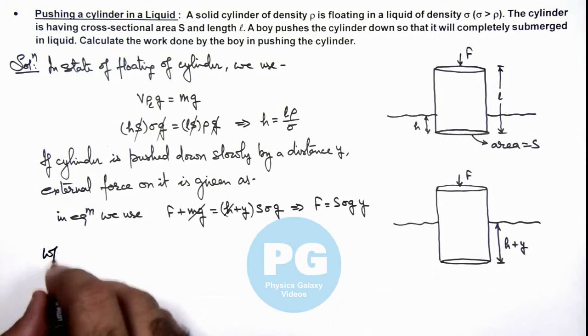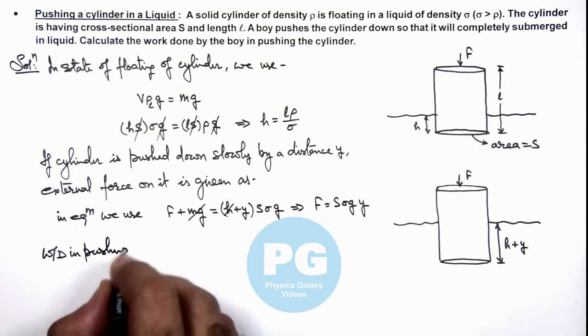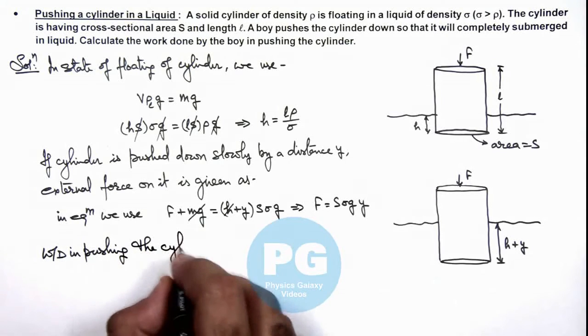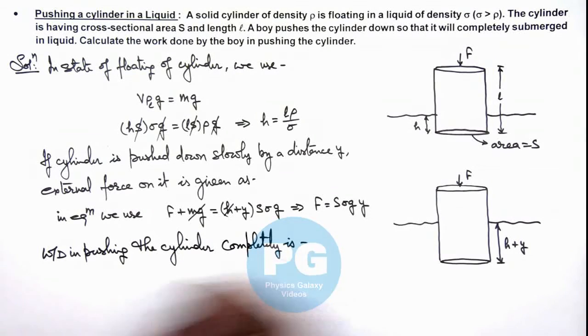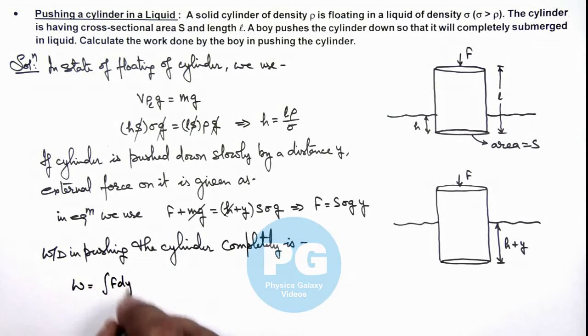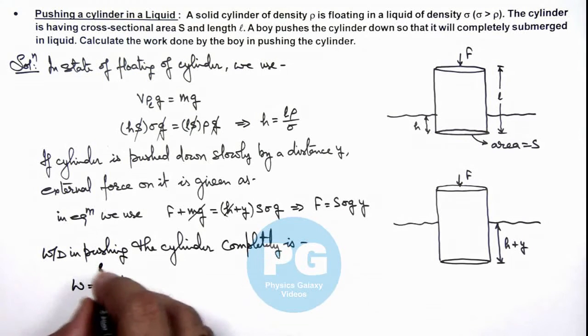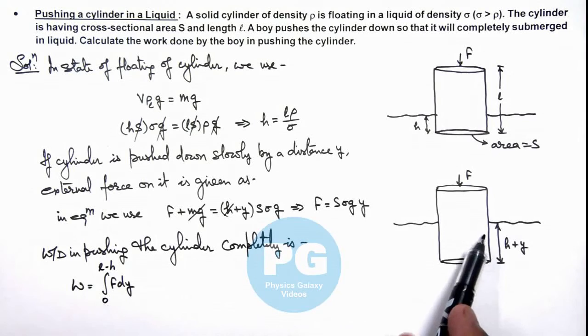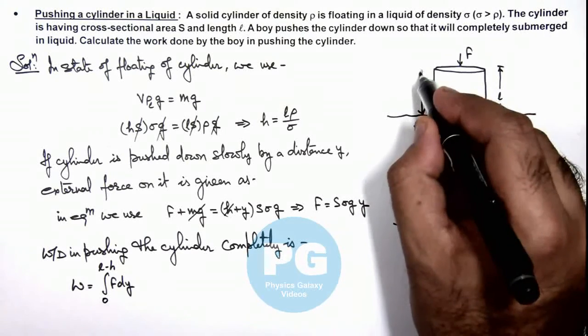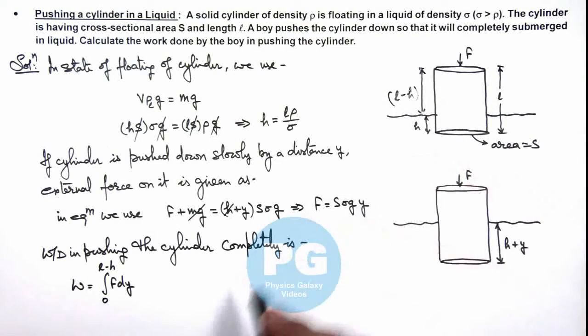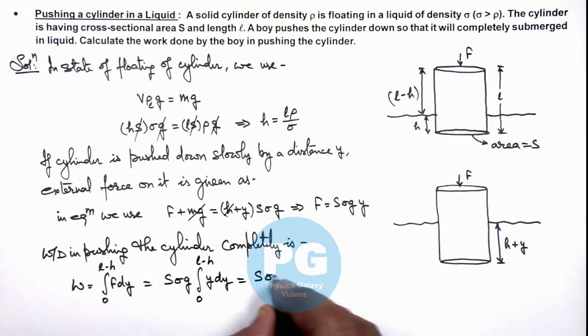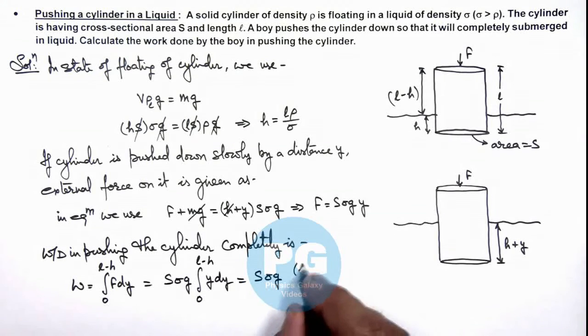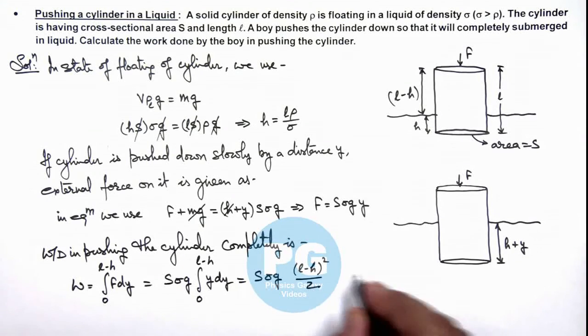So we can now calculate the work done in pushing the cylinder completely. This work done we can write as integration of F dy, and we integrate the value of y from zero to L minus h, because initially y was zero and the total depth which is to be submerged in the liquid is L minus h. So in this situation we write it as Sσg integration of y dy from zero to L minus h, and this will be Sσg multiplied by y squared by 2, that is (L minus h) whole squared by 2. That is the result of this problem.